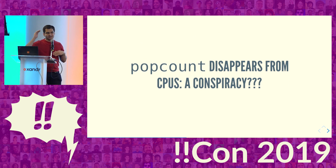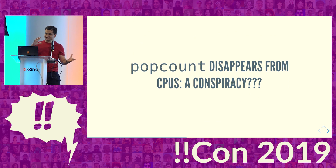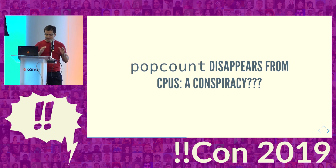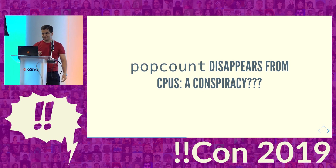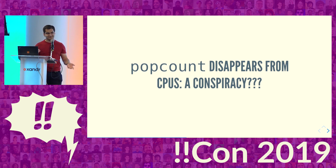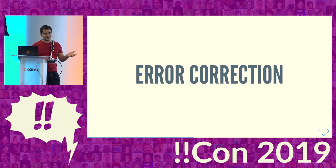Pop count kind of existed in the 60s, then disappeared, and then came back in the 2000s. The conspiracy theory is that the NSA purposely suppressed its inclusion in consumer CPU instruction sets until recently. That's a cool story, but if this were the only thing it was useful for, why would it come back? So let's talk about error correction.